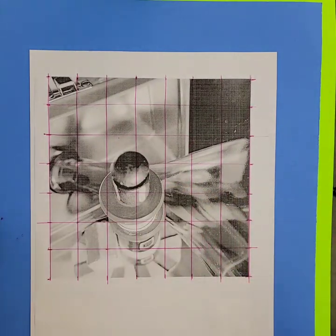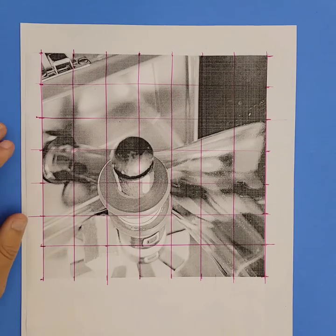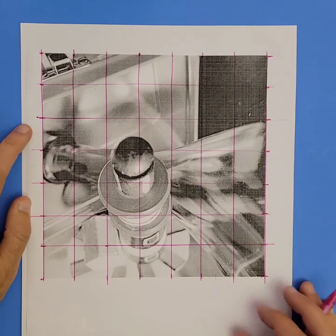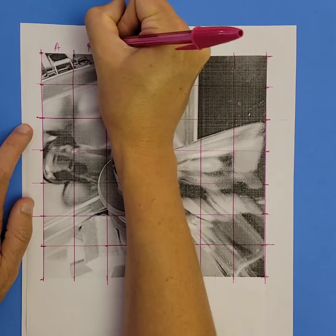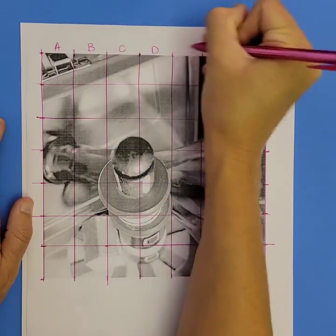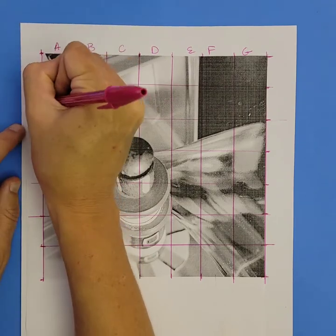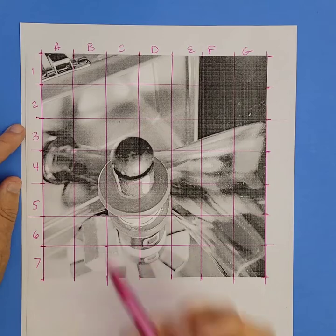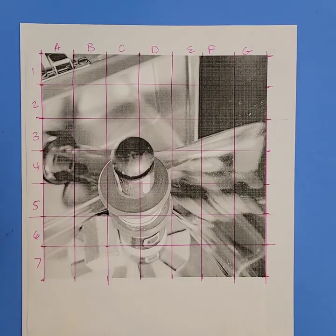And now I have a one-inch grid covering my entire resource image. Sometimes it helps when transferring the image over to the drawing or painting surface if you want to letter and number the grid, just to help keep track of what box you're working in.